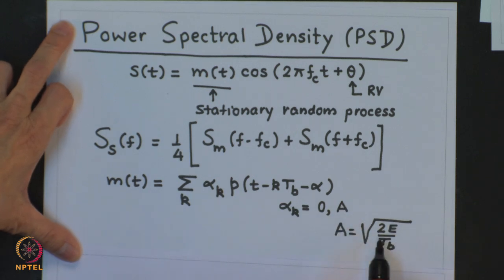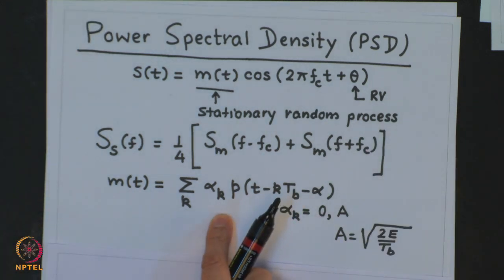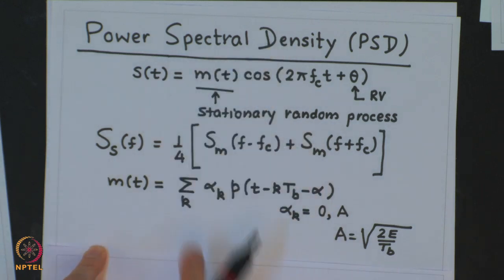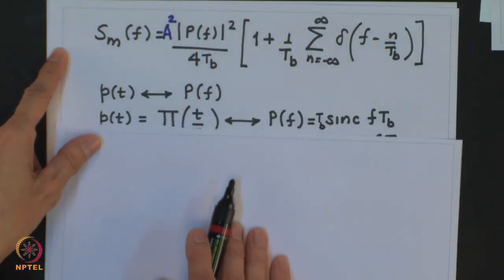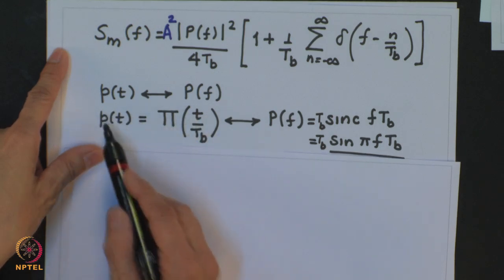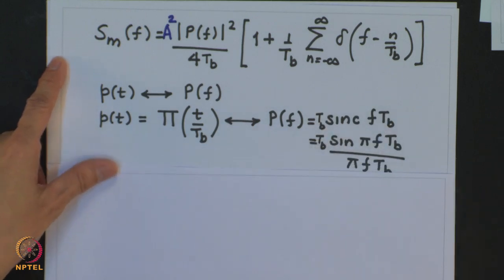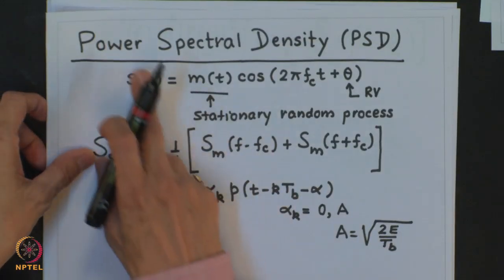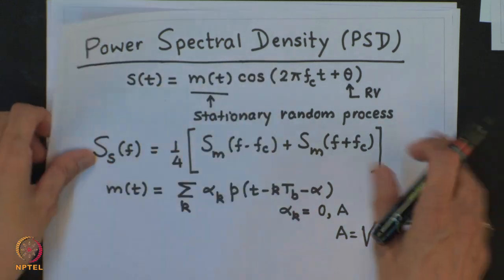Using this relationship, we know how to calculate the power spectral density for the modulating signal M(T). This is nothing but a unipolar line code, and for the unipolar line code we have the derived result for the power spectral density. The Fourier transform of P(T) is P(F); if we use a rectangular shape for P(T), then P(F) is given by the sinc expression. Using these expressions we can plug into the expression for the power spectral density of the modulated signal.